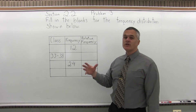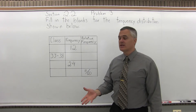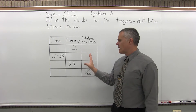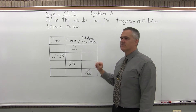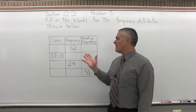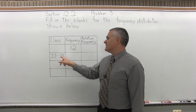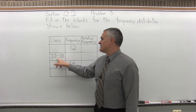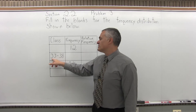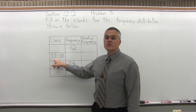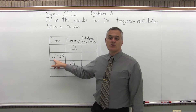The more you fill in, the easier it's going to get. You can go from left to right, or whatever you see first. I'll start on the left. I see the class here. This is a grouped frequency distribution, and it goes from 33 to 38.